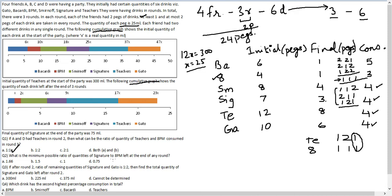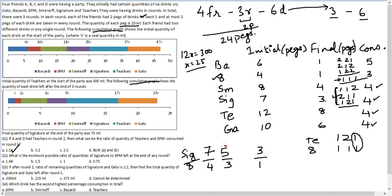What is the minimum possible ratio of quantities of Signature to 8PM left at the end of any round? Signature initially is 7, 8PM initially is 4; finally Signature is 3 and 8PM is 1. The ratio sig/8PM goes from 7/4 to 3/1. To get the minimum possible ratio, I want the numerator to decrease by a higher amount and the denominator to decrease by a smaller amount. Signature consumed in the 2-1-1 fashion: after round 1 it becomes 5, and 8PM after round 1 becomes 3, giving ratio 5/3 ≈ 1.66, which is the highest possible ratio — so the answer is option A.